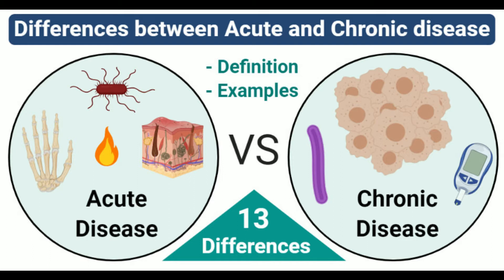Acute disease definition: Acute disease is a condition or disorder that comes on or onsets rapidly and lasts for a shorter period of time. The period of time associated with acute diseases varies with the type of illness and the context, but it is always quantitatively shorter in time when compared to chronic diseases. The term acute is also associated with diseases where the onset is rather sudden and occurs rapidly.